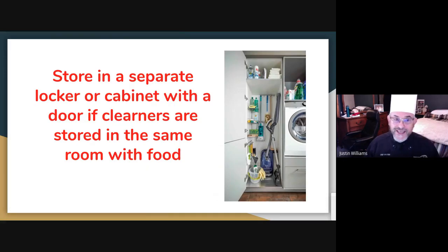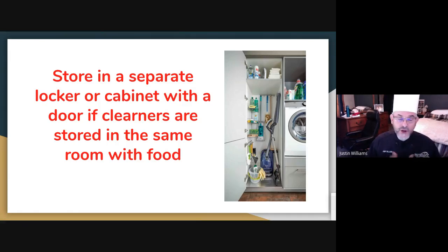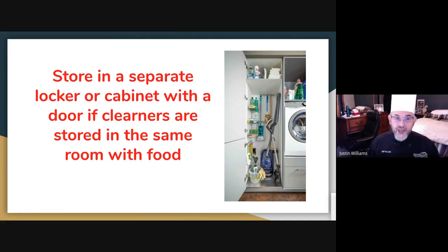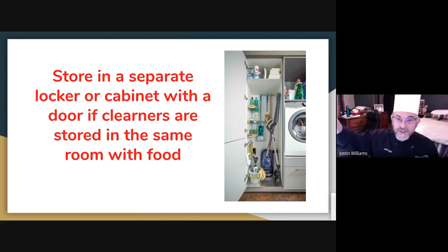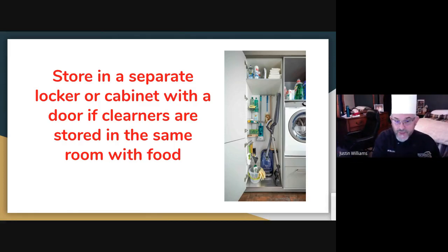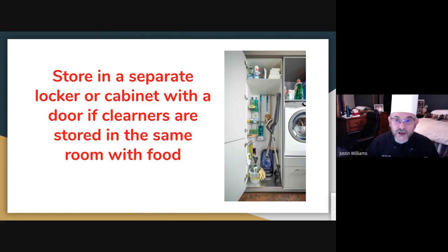You should store your chemicals in a separate locker or cabinet if they're going to be in the same room as food. In our storeroom, there is a separate cabinet: the food is on one shelf, the cabinet is way over on the other side with doors on it, all the chemicals are in there, and the food is separated by at least eight feet. You want to make sure you don't store chemicals with food — in the event a chemical container breaks and drips into the food, that could cause contamination easily.